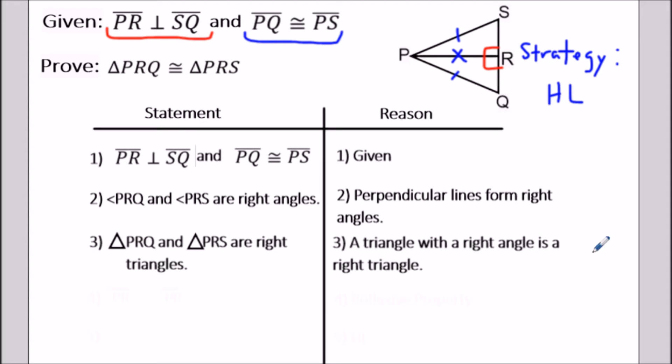This is one of the more important statements because the hypotenuse-leg postulate only works for right triangles. You have to make sure that you're establishing that both triangles involved are actually right triangles.